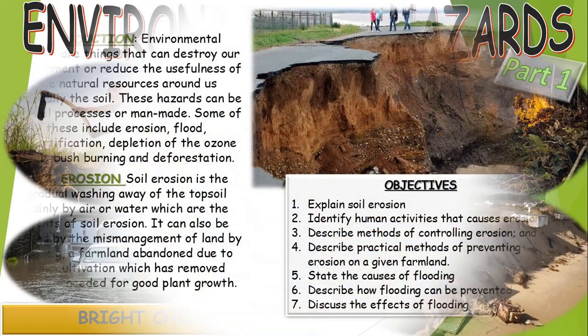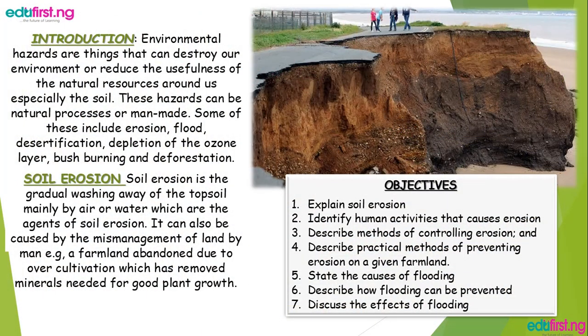What is environmental hazard? These are things that can destroy our environment. For instance, flooding, soil erosion, bush burning, and deforestation. These are most things that cause hazard or that can destroy the environment.